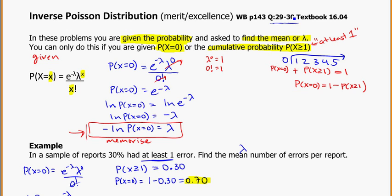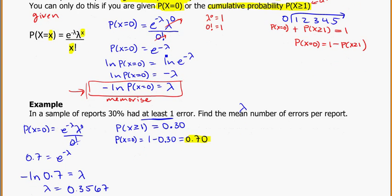And again, the trick is you're going to be finding the mean, but you always have to figure out first what's the probability of it not happening. And then from there, you're okay.